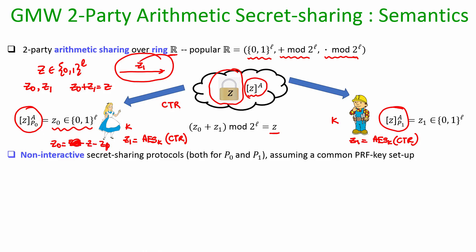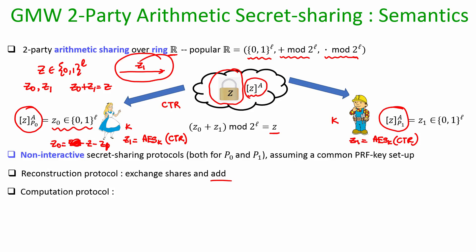A similar step can be executed by Bob to make his part of the secret sharing non-interactive. The reconstruction protocol is simple: if an L-bit number secret shared needs to be publicly reconstructed, both parties exchange their shares and add them — meaning addition modulo 2^L — to get back the L-bit number.